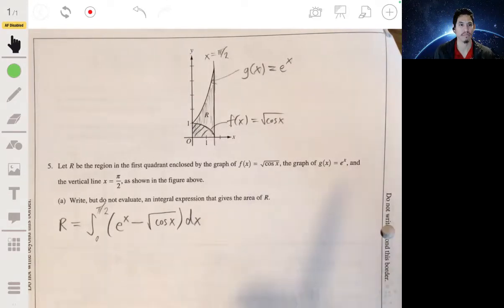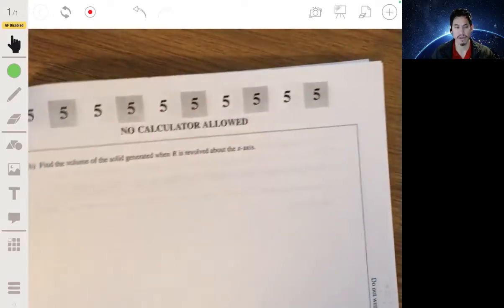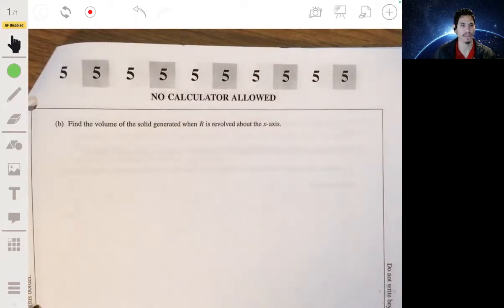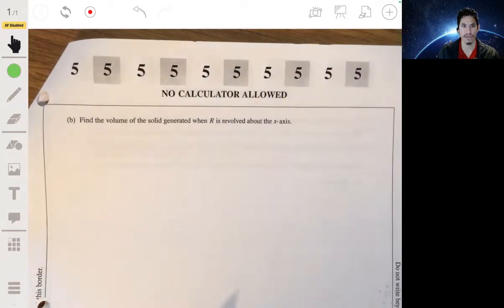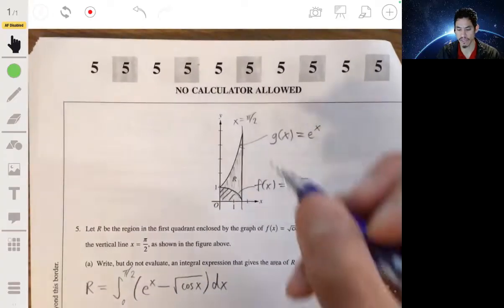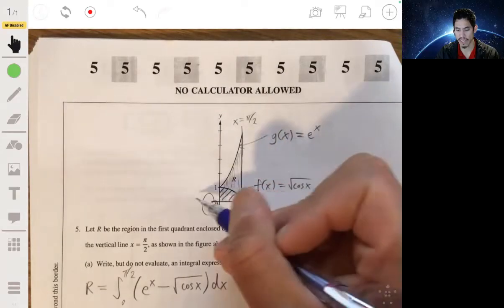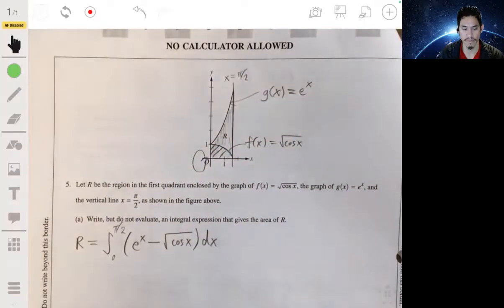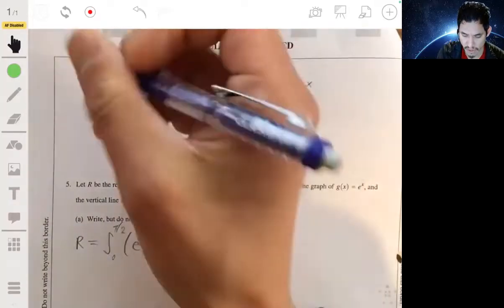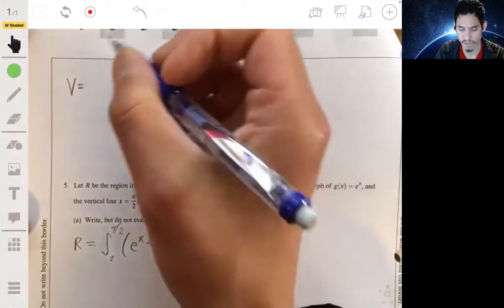Not much to it. Part B. Alright, find the volume of the solid generated when R is revolved about the x-axis. Okay, so we want to find a solid of revolution. We want to find this when we're spinning around the x-axis like that. So let's remember what a volume of the solid of revolution would be.